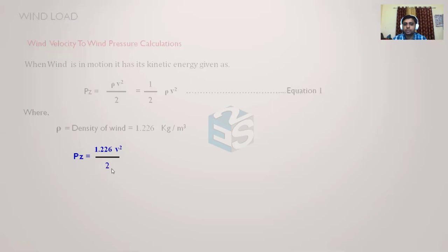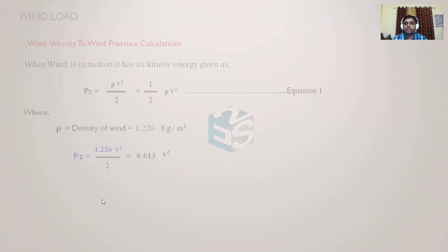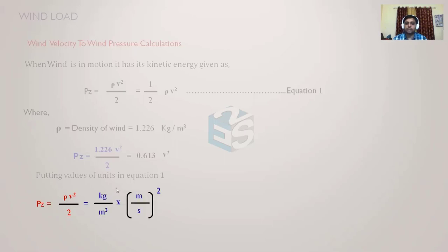Substituting ρ = 1.226 into the equation Pz = ½ρV²: 1.226 ÷ 2 = 0.613, so Pz = 0.613V². This is the equation used to calculate wind pressure. To verify the units: ρ has units of kg/m³ and V has units of m/s, so the equation becomes (kg/m³) × (m/s)².